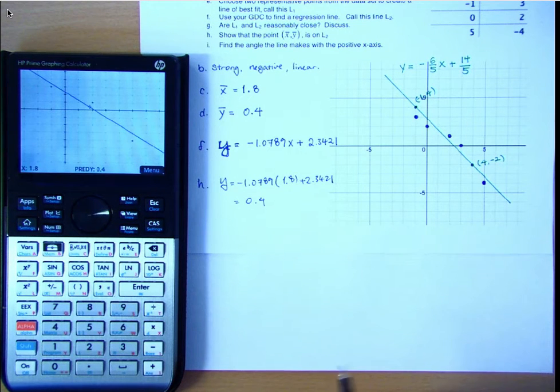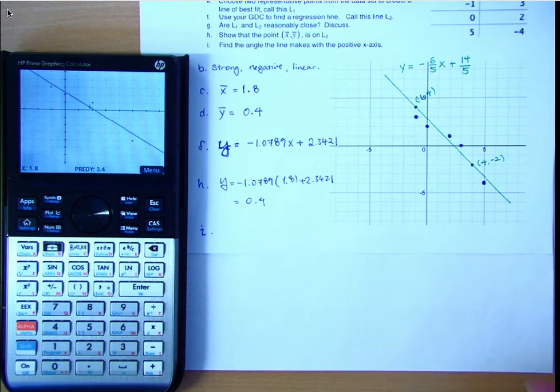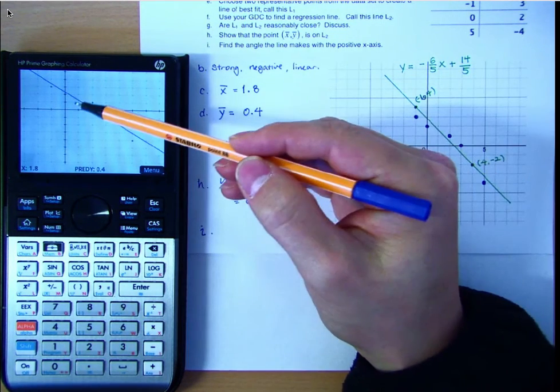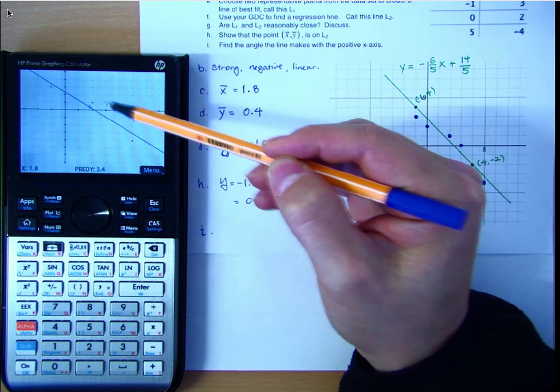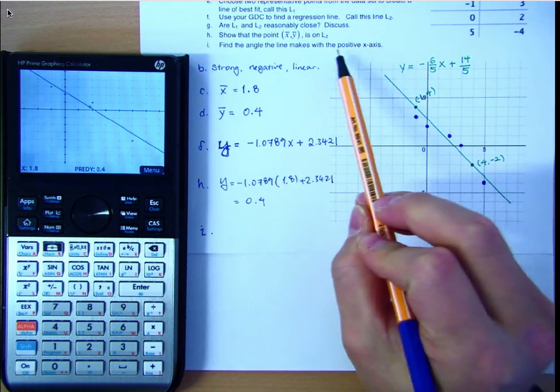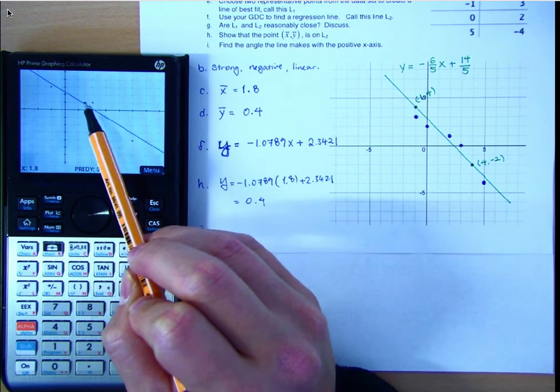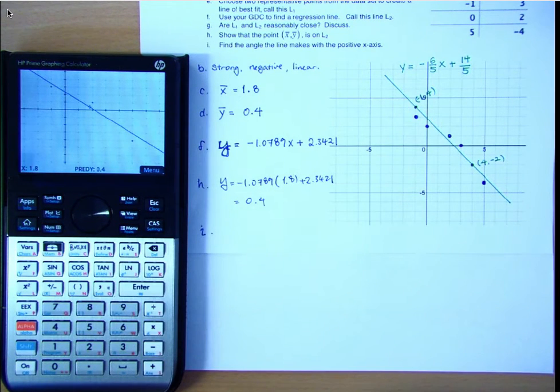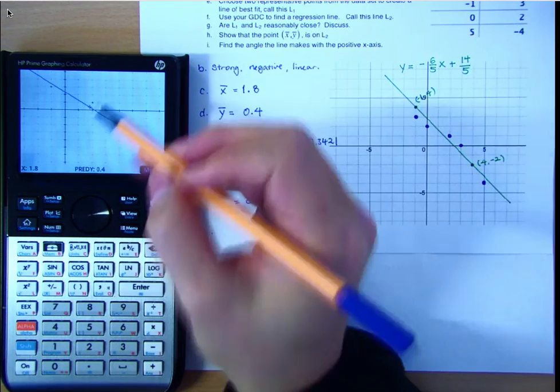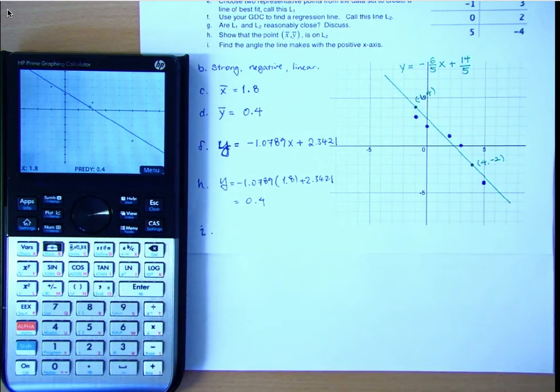Find the angle that the line makes with the positive x-axis. Oh, very interesting. So, we're looking at this angle here or the obtuse angle here. So, are we looking for this obtuse angle here, would you say? I would say we'll go for the acute angle. So, we will find the acute angle. So, one of those will be the acute angle, and they'll be the same, because they're vertically opposite angles.